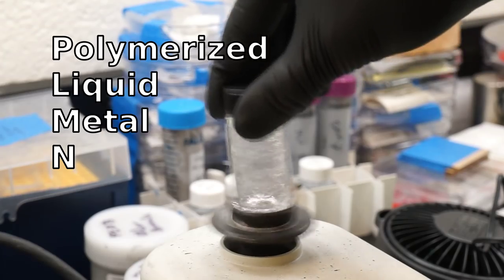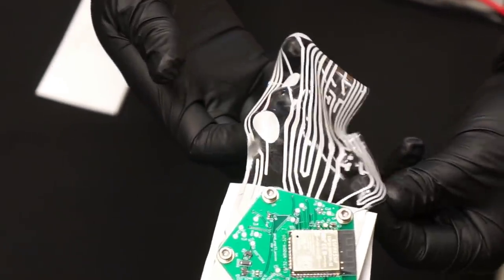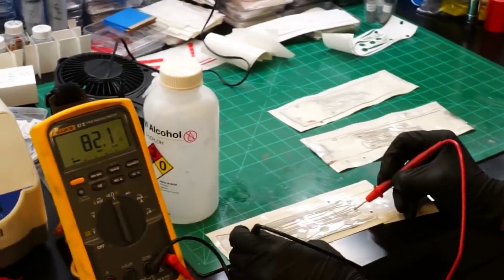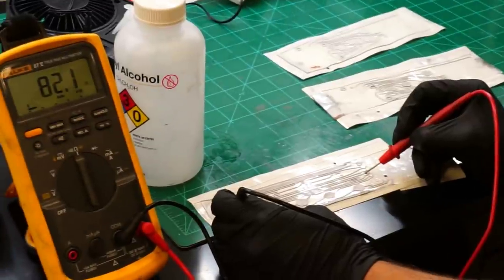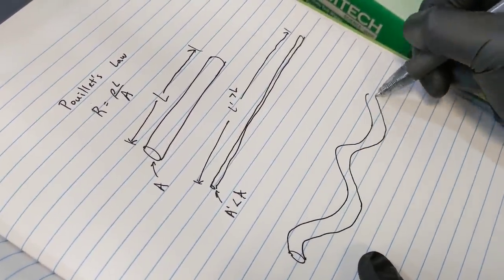The new nanomaterial is PolyLMN, which is short for Polymerized Liquid Metal Network, and it's a strange new nanomaterial. It's got some crazy properties like it can be stretched and it's conductive, and it doesn't follow Poisson's law, which means that when it is stretched it doesn't really change resistance much at all.